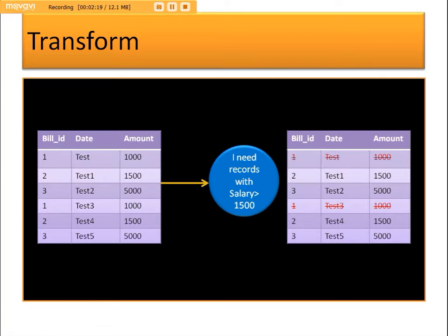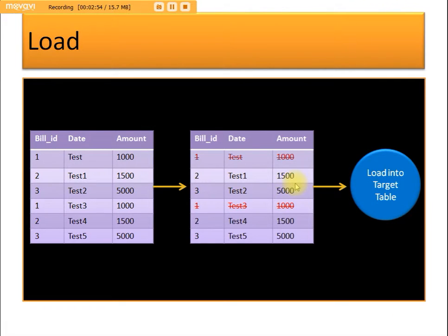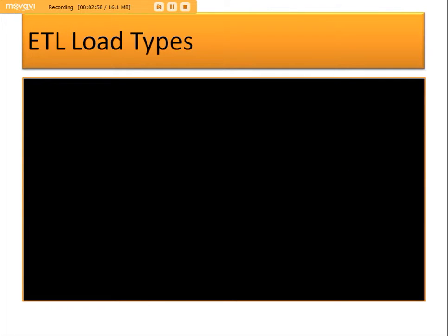Records with salary less than or equal to 1500 will be dropped. In this case, two employee records have been dropped off, so four records are now filtered and ready for the next phase — loading. These four active records will be loaded into the target table. This is how the extract, transform, and load process works.